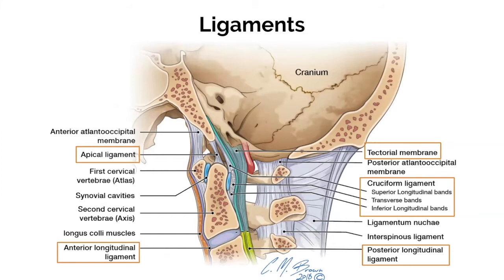Ligaments contribute a lot to the overall stability of the c-spine. They protect neural structures by limiting motion and absorb energy during high-speed motions. A few important ones: the apical ligament joins the tip of the dens to the anterior margin of the foramen magnum — the hole in the skull where the spinal cord exits — and is fairly weak. The tectorial membrane is a thin superior continuation of the posterior longitudinal ligament from the body of C2 to the clivus. The cruciform ligament is made up of superior and inferior longitudinal bands and the transverse band. The transverse ligament is the strongest ligament in the entire spine, passing from the medial aspect of the lateral masses of C1 posterior to the dens, fixing it in place behind the anterior arch of C1.